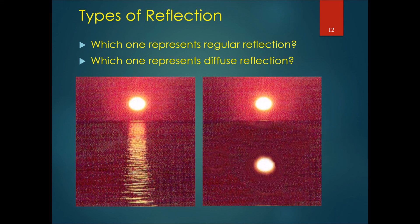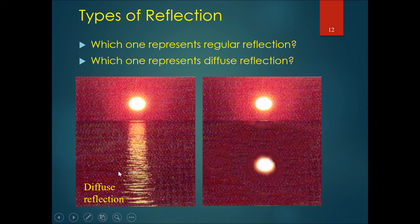A little test: which one represents regular reflection and which represents diffuse reflection? This image represents diffuse reflection — you can see a moon shape, but because there are waves on the water surface, the reflection is not perfect and you see a blurred bar rather than a clear image. The other image represents a still lake with regular reflection — when light shines onto the calm water, it reflects straight into your eyes making a perfect image. This is regular reflection.